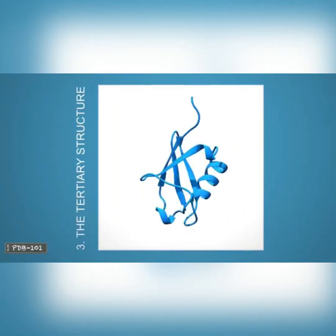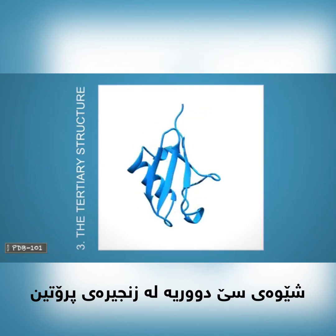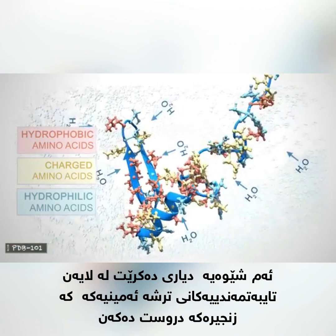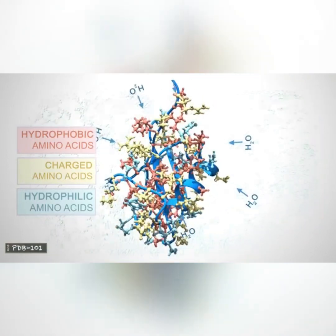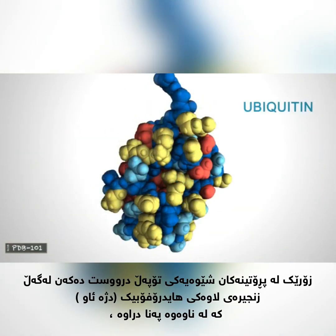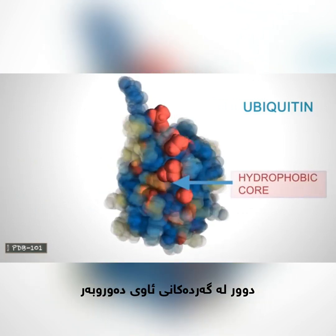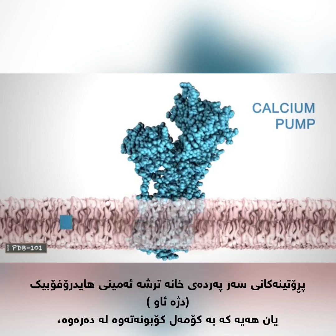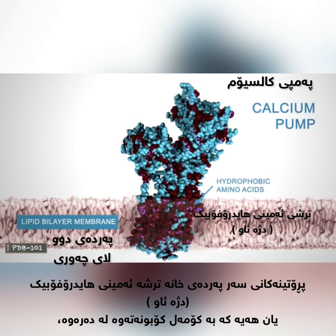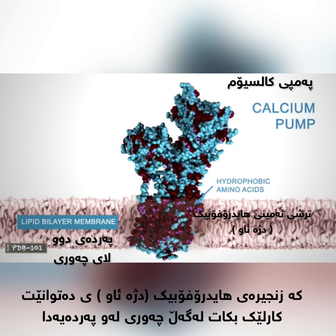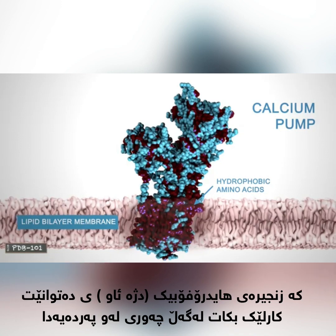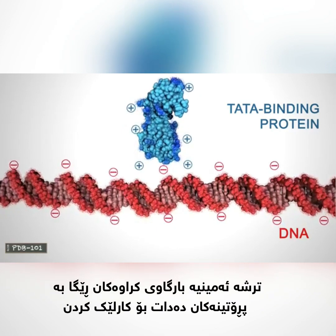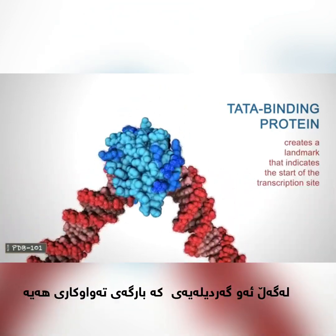The tertiary structure of a protein is the three-dimensional shape of the protein chain. This shape is determined by the characteristics of the amino acids making up the chain. Many proteins form globular shapes with hydrophobic side chains sheltered on the inside, away from surrounding water molecules. Membrane-bound proteins have hydrophobic amino acids clustered together on their exteriors, so that hydrophobic side chains can interact with the lipids in the membrane. Charged amino acids allow proteins to interact with molecules that have complementary charges.